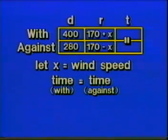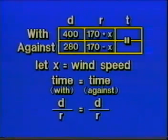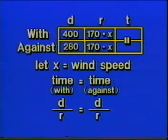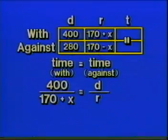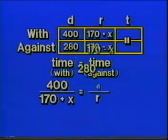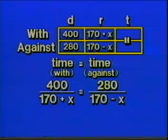The time going with the wind is equal to the time going against the wind. We know from experience that time can be represented as distance divided by rate, and all we need to do is fill in information from our table. For the left side — traveling with the wind — the distance is 400 miles and the rate is 170 plus X. On the right side, it's 280 over 170 minus X. There are a couple of ways to solve an equation like this with one fraction on each side, but one way is to cross-multiply.